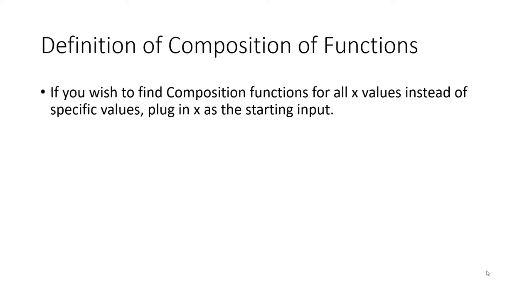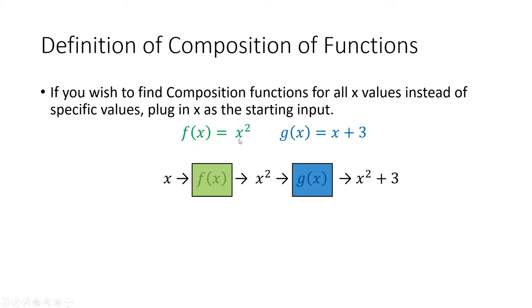If you wish to find composition of functions for all x values, instead of specific values like 2, plug in the x as the starting input. So here we have the same functions. And using x as the input, plug in x into the function, we get x². Now plug in the result, x² into the second function, we get x² + 3. This is g(f(x)) or just g∘f, which is x² + 3.